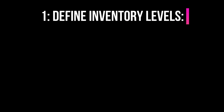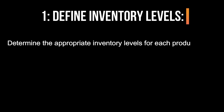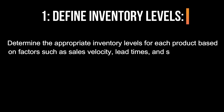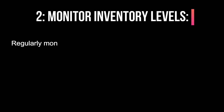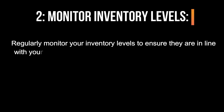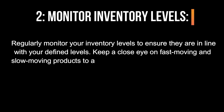1. Define inventory levels. Determine the appropriate inventory levels for each product based on factors such as sales velocity, lead times, and seasonality. Set minimum and maximum stock levels for each product to trigger reordering or restocking. 2. Monitor inventory levels. Regularly monitor your inventory levels to ensure they are in line with your defined levels. Keep a close eye on fast-moving and slow-moving products to avoid stockouts or overstock situations.